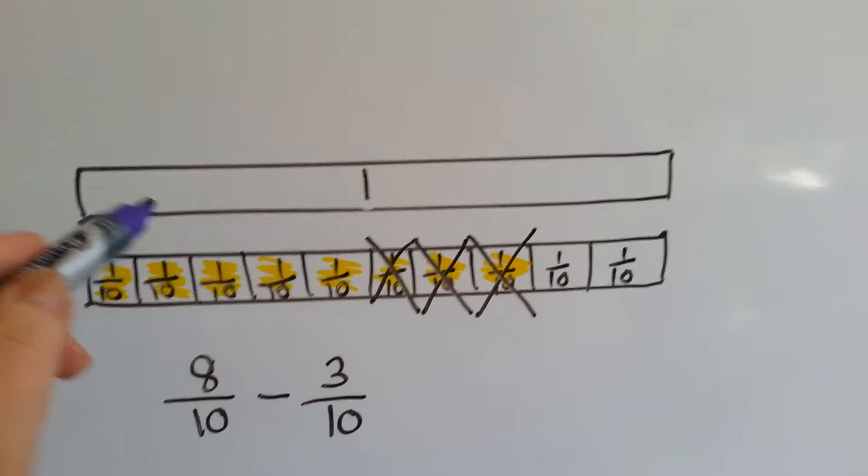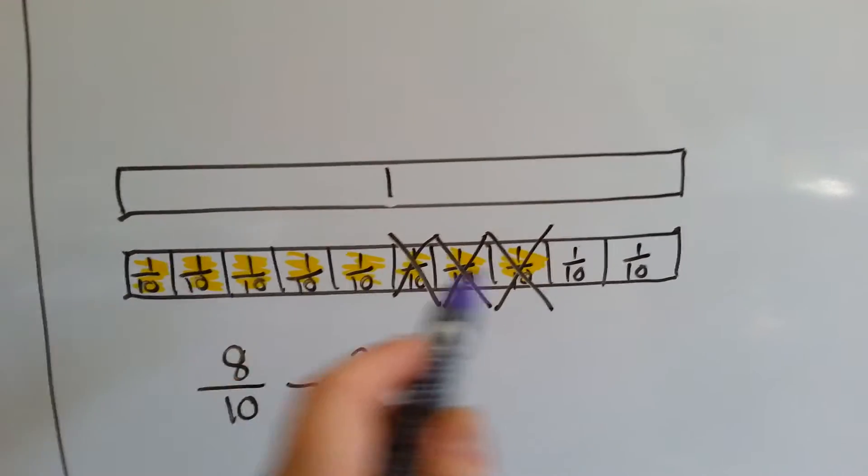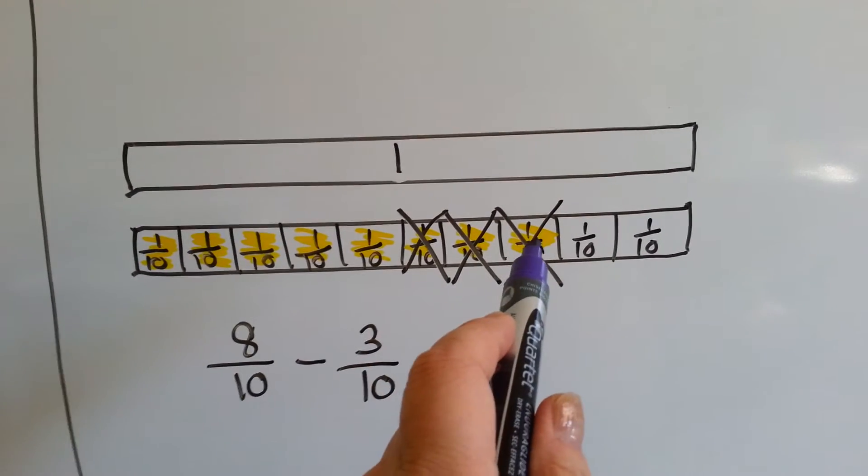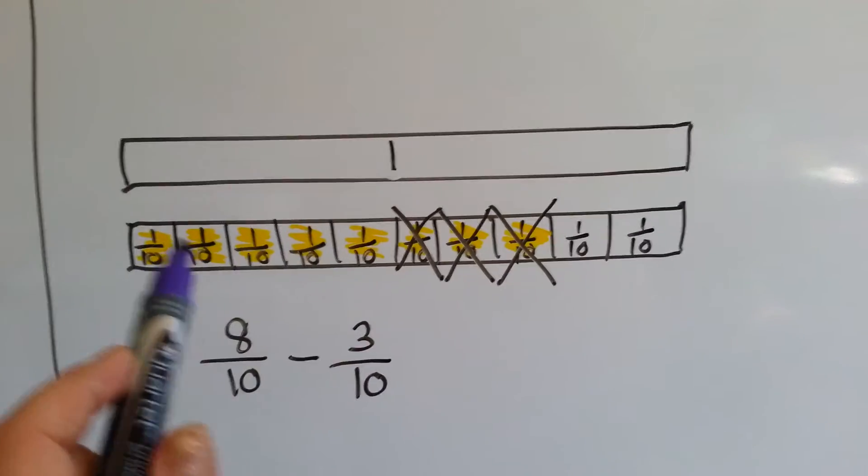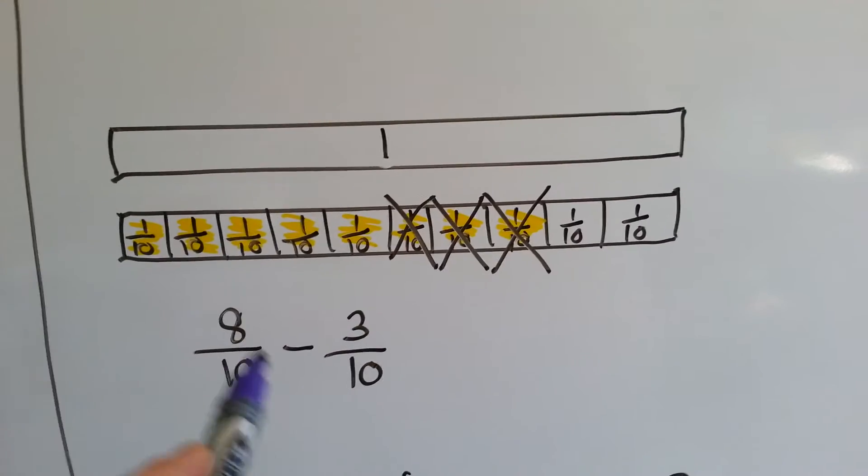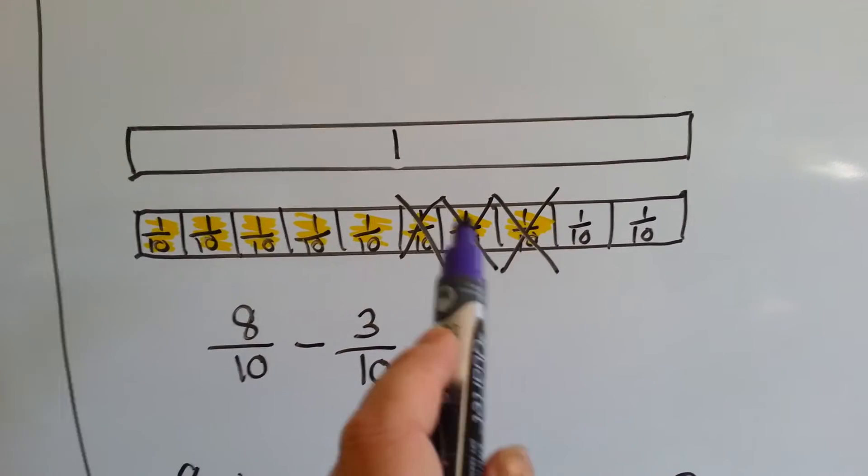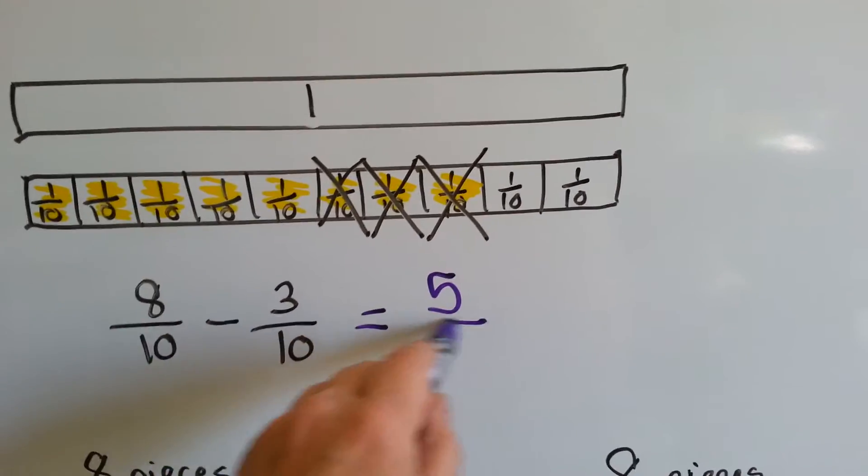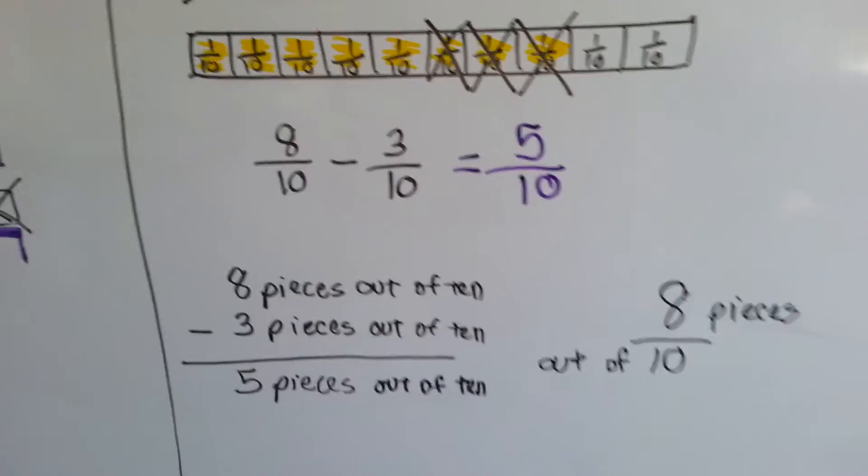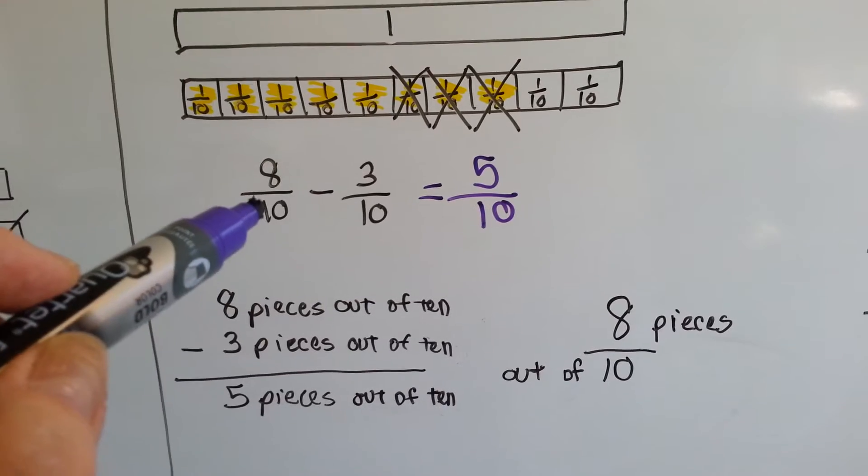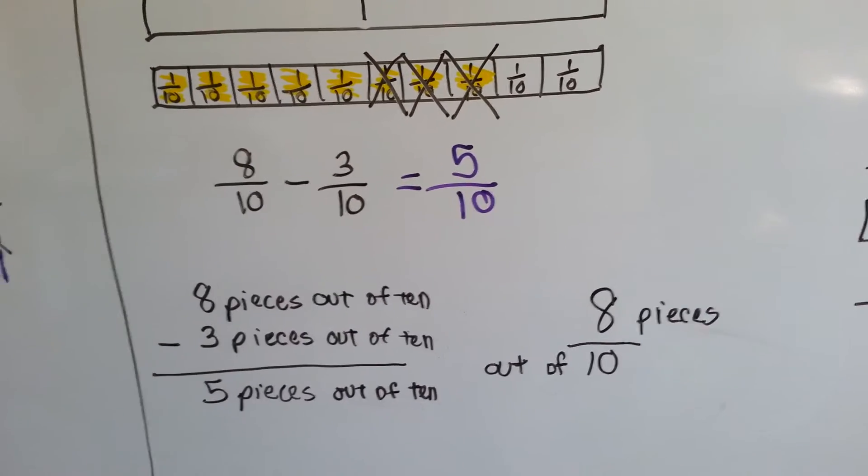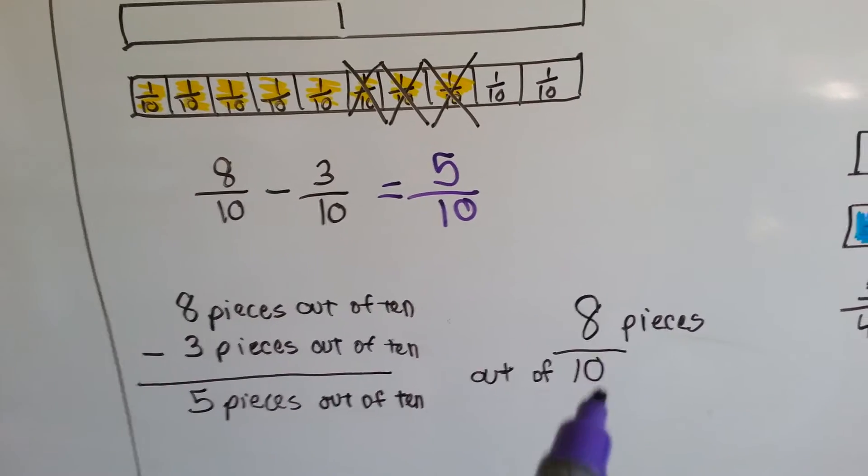We can look at another one now. If the top bar represented a whole thing, and the bottom bar was a whole thing split into ten parts, and the yellow parts were the eight parts that we had, it would be eight little one-tenths. If we took three of those one-tenths away, it would leave how many? One, two, three, four, five of them. Five little one-tenths would be five-tenths. Think of it as eight pieces out of ten. Eight pieces out of all ten of them. And you took away three that would leave five. Eight pieces out of ten. That's how you can look at a fraction.